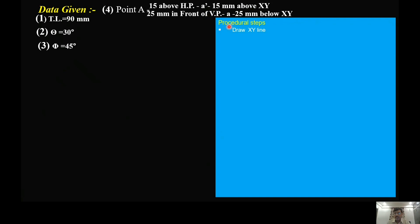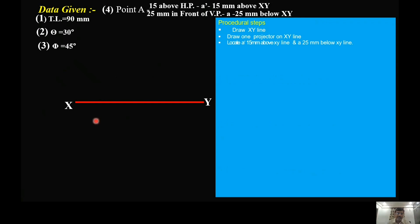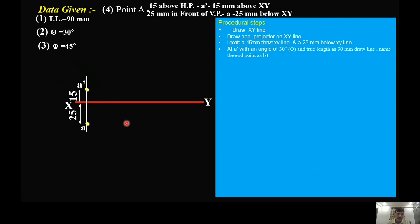Now we will move towards the procedural steps and construction of the projection of the straight line. As a first step, draw the XY line, then draw a projector on the XY line, and on the projector locate A dash and A. A dash is 15 mm above XY and A is 25 mm below XY. At A dash, with an angle of 30 degrees to HP and a length of 90 mm, draw a line and name the end point as B1 dash.